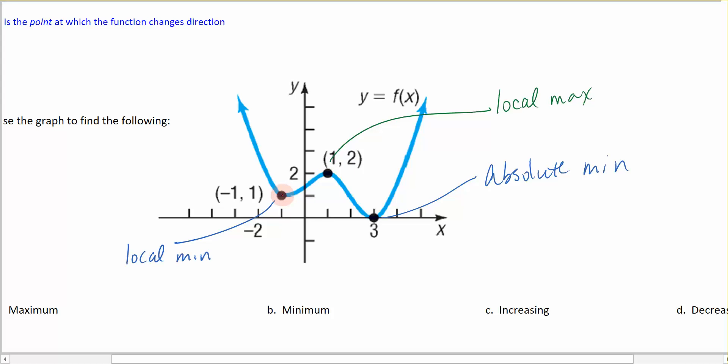Notice here I have a minimum value along this curve and a minimum value over here along this curve. Both of these points are minimum values. This point over here however is labeled as a local min and this one over here would be an absolute min.